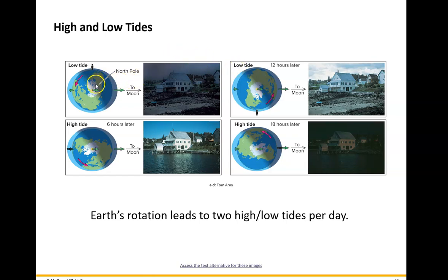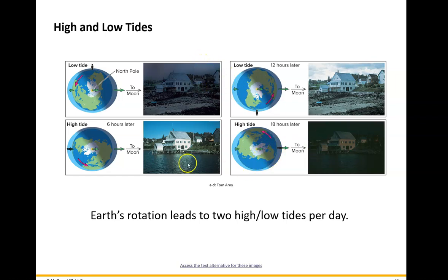We have two high tides a day and two low tides a day. There's a low tide, six hours later there's a high tide, six hours later there's a low tide, and then six hours later there's a high tide, and then six hours later there's a low tide again. They're offset each day by about 50 minutes.